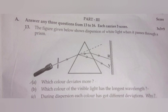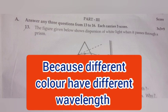(c) During dispersion, each color has got different deviation. Why? Because different colors have different wavelength.